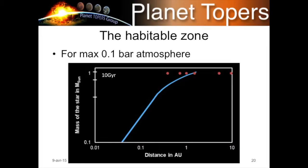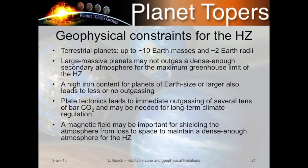What does this mean for the habitable zone if you cannot expect an atmosphere of more than 0.1 bar? The continuous habitable zone in the upper mass range essentially disappears. To summarize the geophysical constraints: for terrestrial planets up to ten Earth masses and two Earth radii, large-mass planets are less likely to outgas dense enough atmospheres for the outer habitable zone boundary; high iron content also leads to less likely outgassing; and plate tectonics may be needed both for long-term climate regulation and for maintaining a strong enough magnetic field to preserve a dense atmosphere.